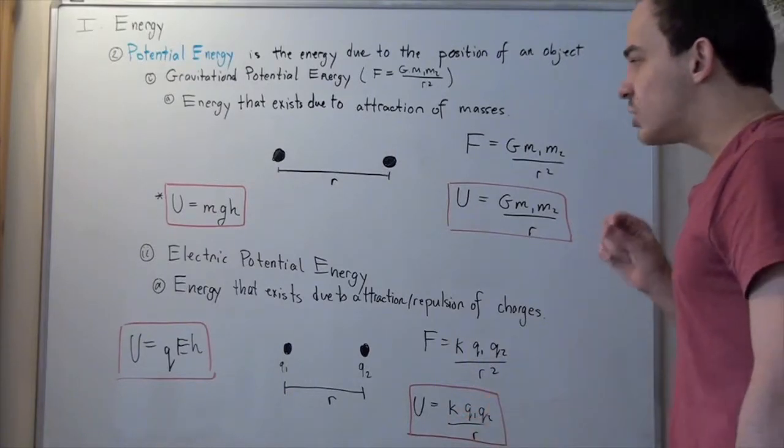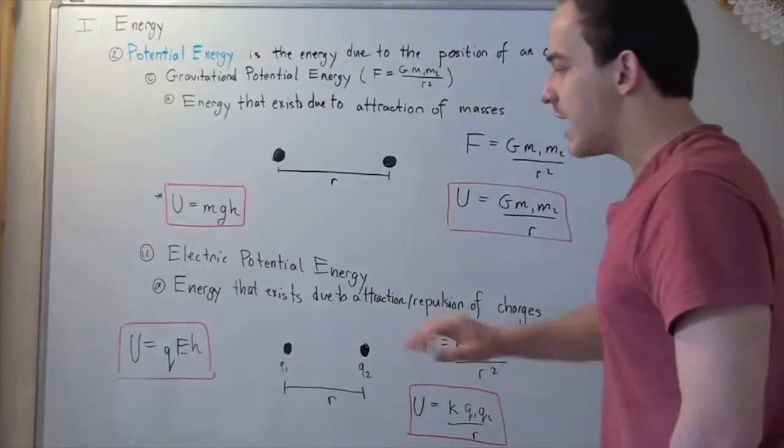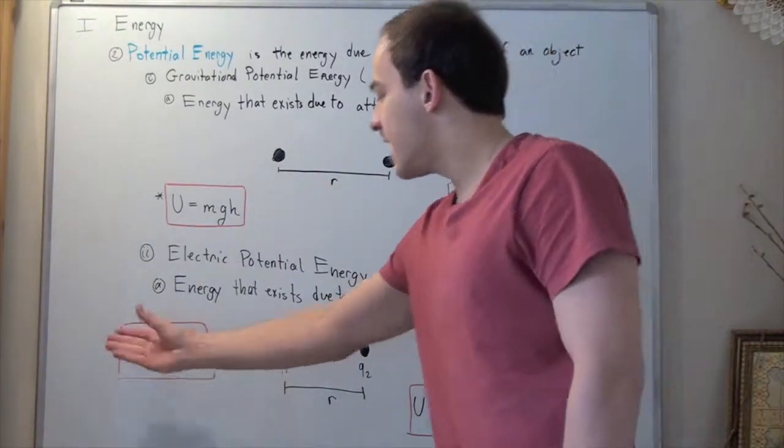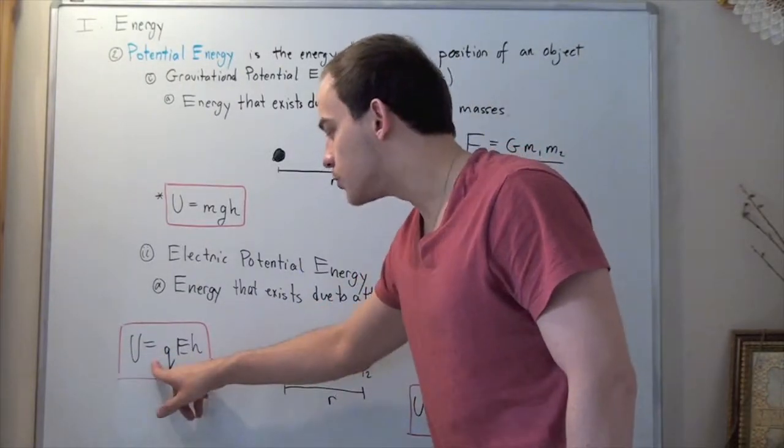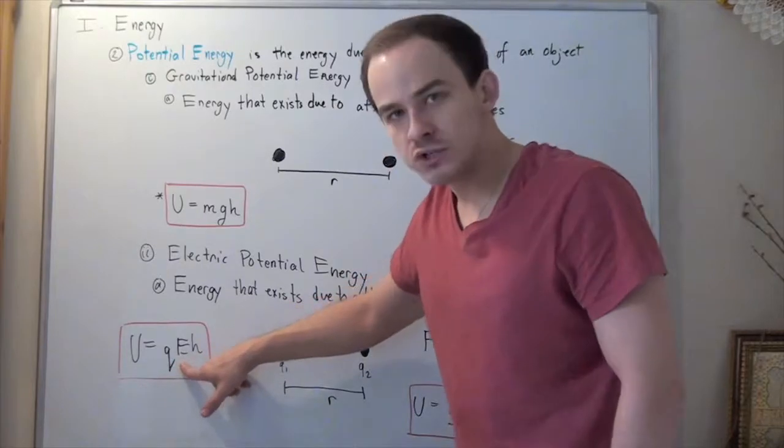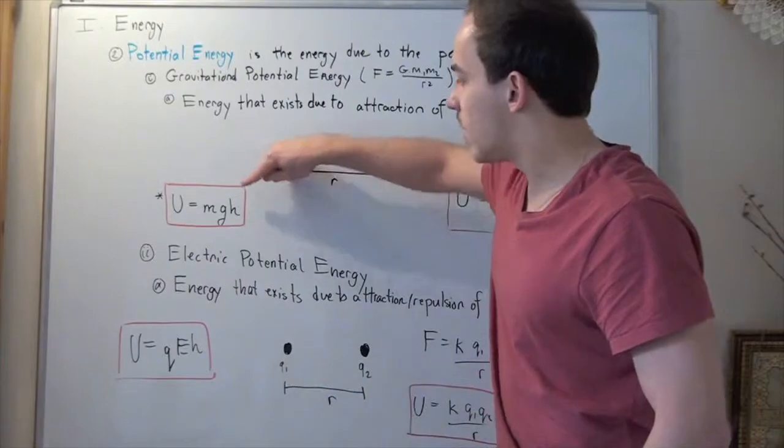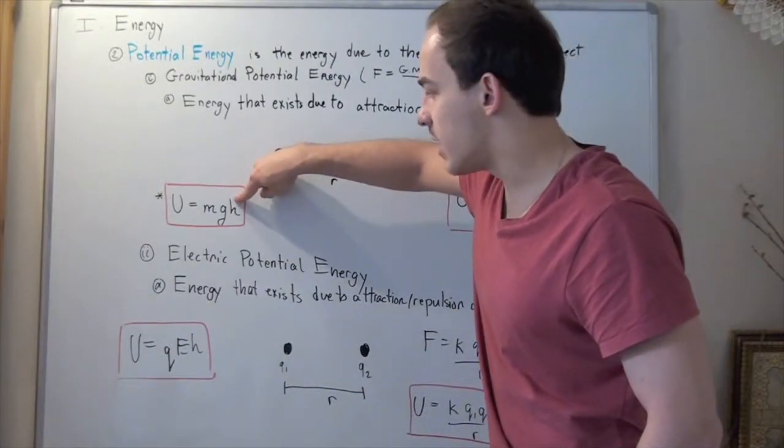Now, there's an equivalent expression like this one for electric potential energy, and that is this formula. The energy is equal to charge, in this case it was mass, but now it's charge. The electric field, in this case it was the gravitational field, and H is the distance, likewise we have H distance here as well.